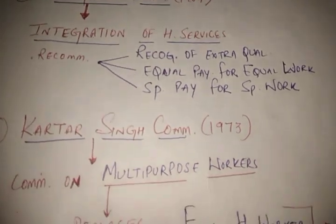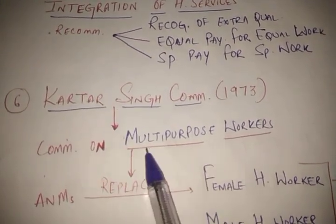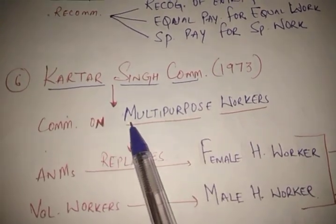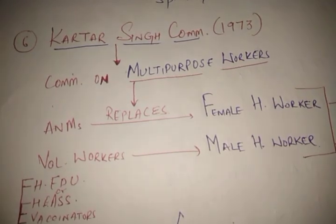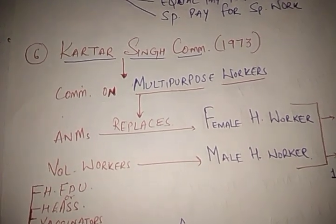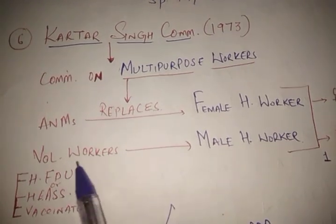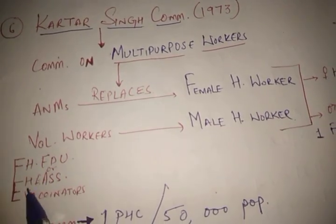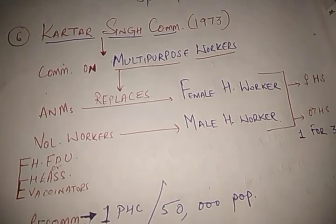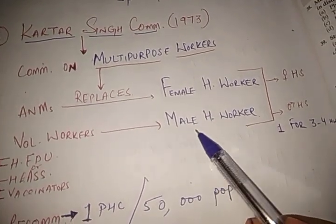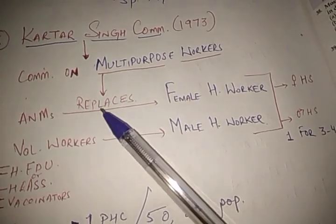After the Jungalwalla Committee, the Kartar Singh Committee came in 1973. This committee is also called the Committee on Multi-Purpose Workers. The Kartar Singh Committee came to replace workers already working in the above-mentioned committees — it replaces the Auxiliary Nurse Midwife with female health workers, and also replaces voluntary workers like health educators, health educator assistants, vaccinators, and malarial surveillance workers with more advanced male health workers.